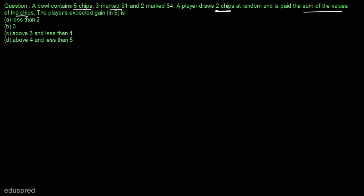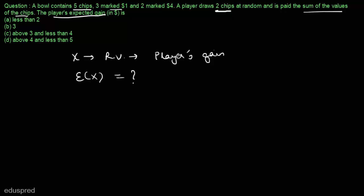Let's say that x is a random variable denoting the player's gain, and as per the question we have to find the player's expected gain. This means we have to find the expected value of x. We know that the expected value of x is equal to summation of x multiplied by probability of x, where small x is a particular value of the random variable x.